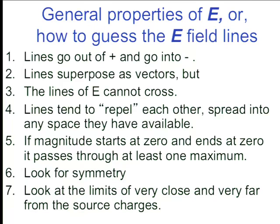Let's see. What are they here? Let me see if I can read it better here. Well, first of all, we said that the lines go out of the positive and into the negative. They superpose as vectors. They cannot cross. And in a sense, they sort of repel each other. They spread into any space that they have available.